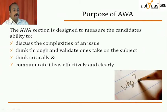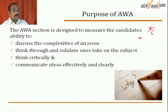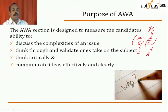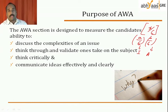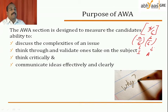Your AWA score is out of six. You will have two tasks — one is an issue task and the other is an argument task. Both of them will be evaluated on a score of six, and the average of the two scores will be your final AWA score. This score will not be given to you immediately after the exam — unlike the quantitative and verbal sections which are multiple choice and scored immediately, this one will take around two weeks, approximately 15 days, to evaluate.